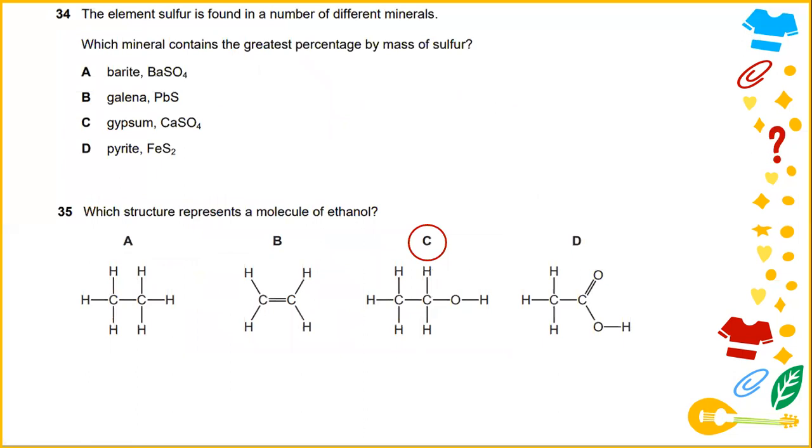The element sulfur is found in a number of different minerals. Which mineral contains the greatest percentage by mass of sulfur? Pyrite. The mass of sulfur contained in 30 grams of pyrite is 60 grams. Pure pyrite contains 46.67% iron and 53.33% sulfur by weight. The answer would be D.